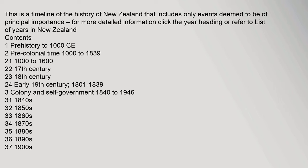This is a timeline of the history of New Zealand that includes only events deemed to be of principal importance. For more detailed information, click the year heading or refer to the list of years in New Zealand.